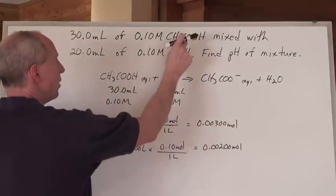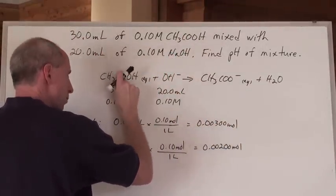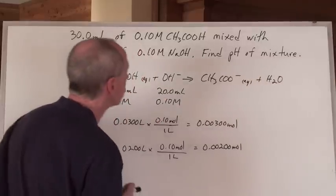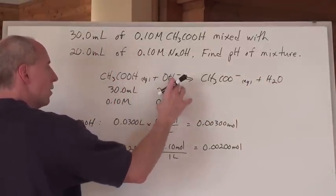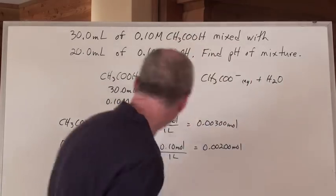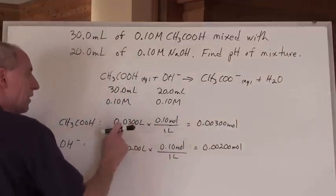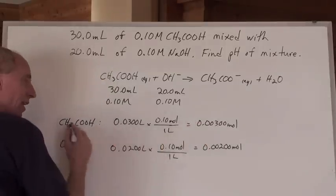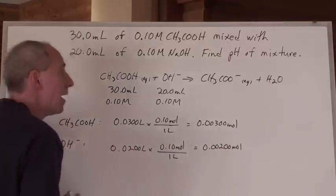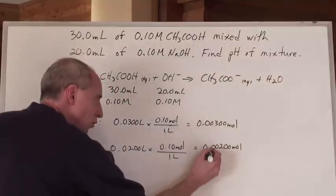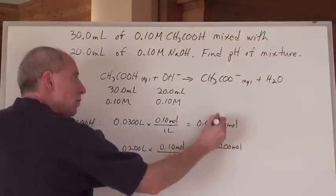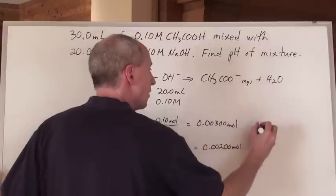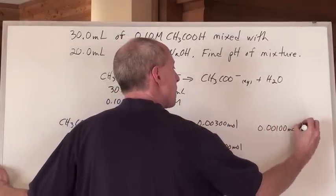If I've got my net equation here — acetic acid reacting with hydroxide — we transfer the proton from this Brønsted-Lowry acid to this Brønsted-Lowry base to form the conjugate base and conjugate acid. Here are the volumes and concentrations of both chemicals. Multiplying liters times moles per liter gives us 0.003 moles of acetic acid and 0.002 moles of hydroxide. When these two react, the 0.002 moles of hydroxide is completely consumed in a one-to-one molar ratio, leaving 0.001 moles of acetic acid in excess.